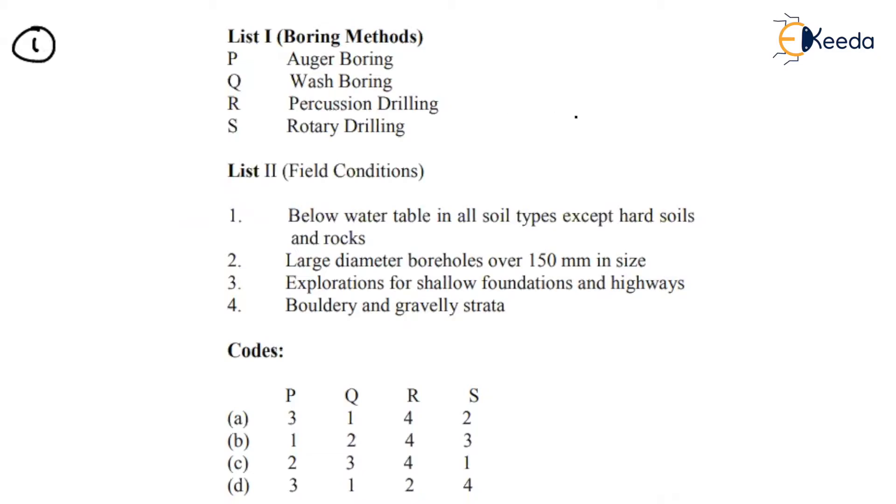First see this is the match the following type. They have given types of borings and then we have to select corresponding to each field condition. Now you see one by one what about the auger boring. I can directly see here also how many options are there under P, three one two three, so most option is there in three.